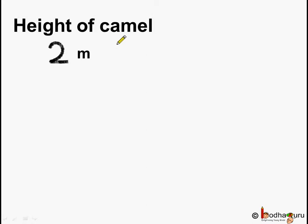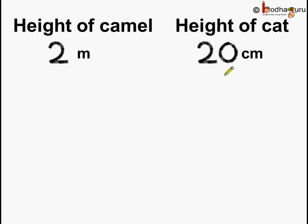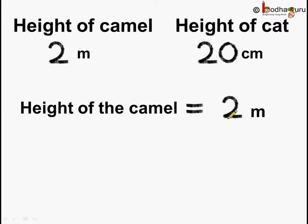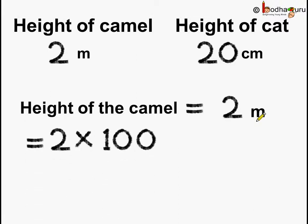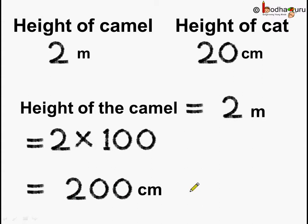We know the height of the camel was 2 meters and the height of the cat was 20 centimeters. The camel's height is in meters and the cat's height is in centimeters. For comparison, both the units should be the same. The height of camel is 2 meters — let us convert it into centimeters. 1 meter is equal to 100 centimeters, so 2 multiplied by 100 gives us 200 centimeters.